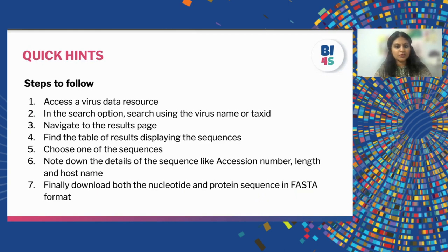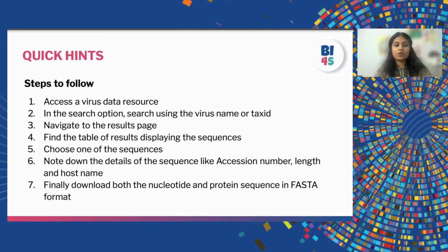Then we are going to navigate through the results page. Once we reach the results page, we are going to choose one of the sequences, because monkeypox virus will have a lot of sequences. We can choose one of the listed sequences provided in the results table. Once we choose our sequence, we are going to note a few details: the accession number, the length of the sequence, and the host name. Once done with all this, we are going to download the sequence of the virus.